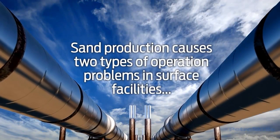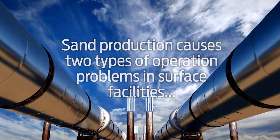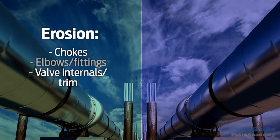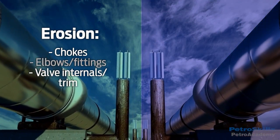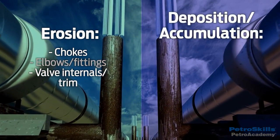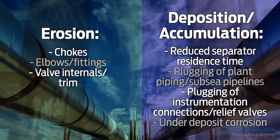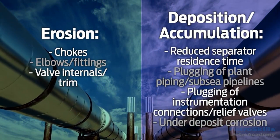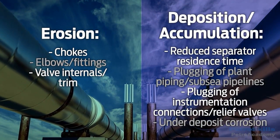Sand production causes two types of operational problems in surface facilities. First, erosion of piping and fittings, like chokes, elbows and fittings, and valve internals and trim — high velocities can be very problematic from an integrity standpoint. Second, deposition and accumulation of sands reduce separator residence time, causing plugging of plant piping, subsea pipelines, plugging of instrumentation connections or relief valves, and under-deposition corrosion.